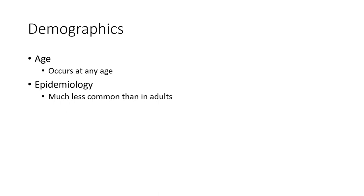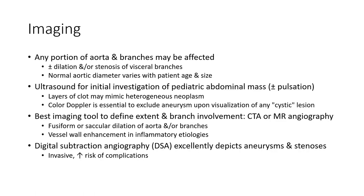Epidemiology: can occur at any age, much less common than in adults. Imaging: any portion of the aorta or branch may be affected, plus or minus pulsatile abdominal mass and stenosis of visceral branches. Normal aortic diameter varies with patient age and size. Ultrasound is used for initial investigation.